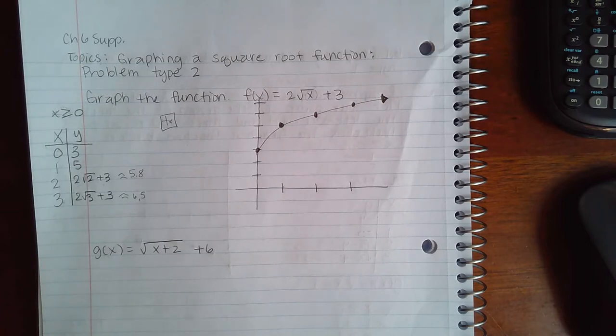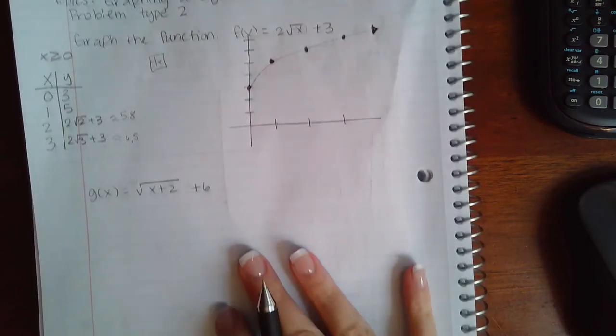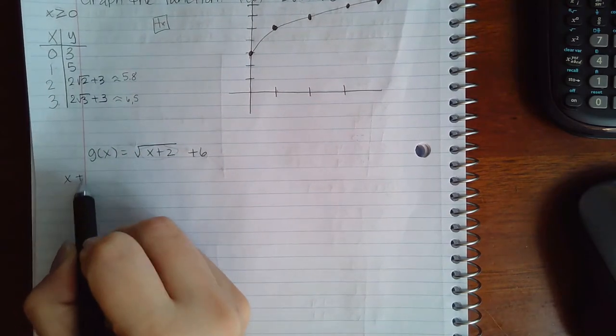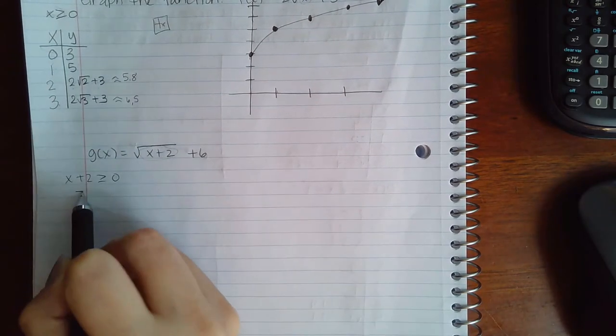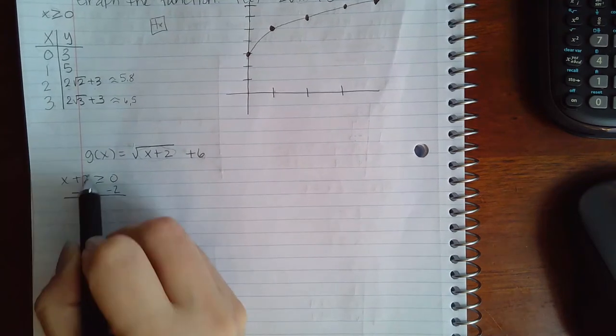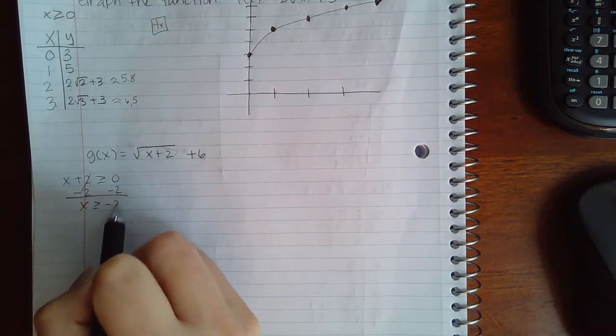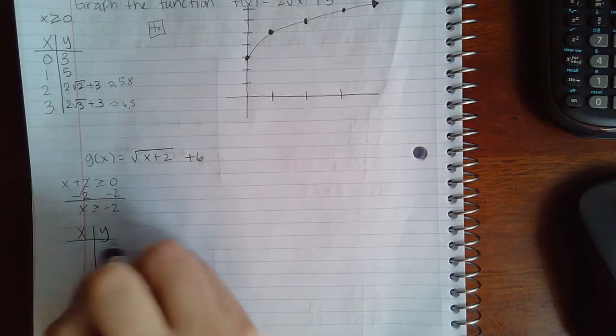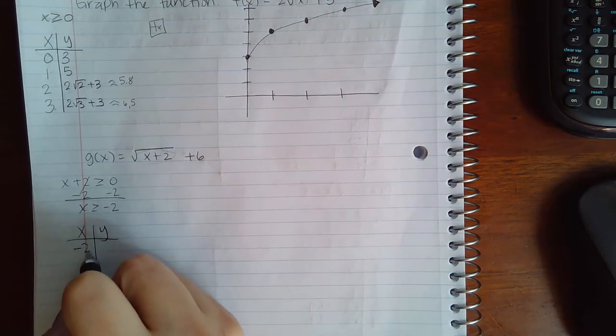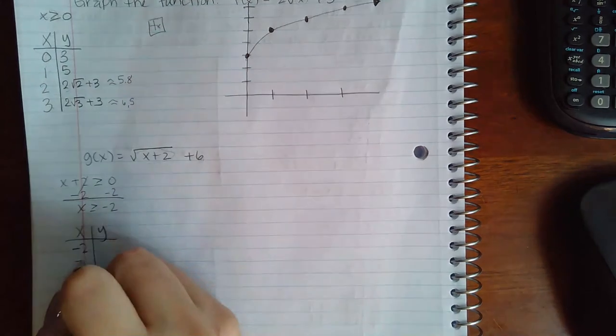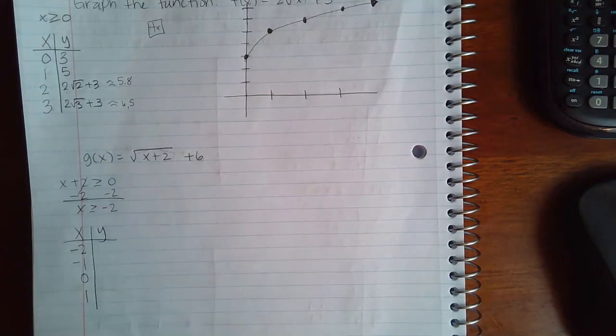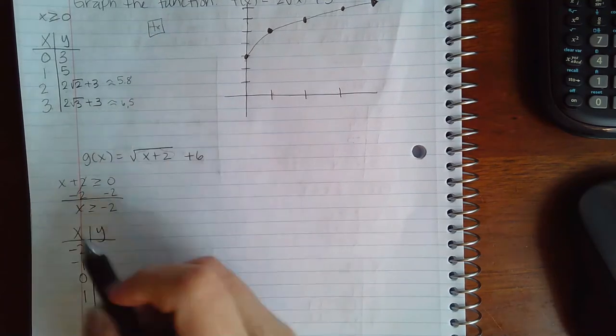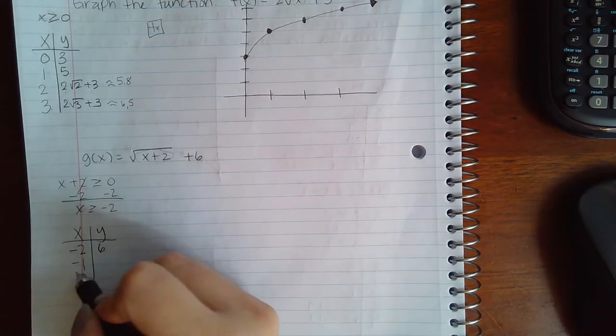Inside ALEKS. For the next one, it's the same thing. Take what is inside the radical and set that greater than or equal to 0. This one I do actually have to solve, so I get x is greater than or equal to negative 2. So then I have -2, and then values bigger than that would be -1, 0, and positive 1.